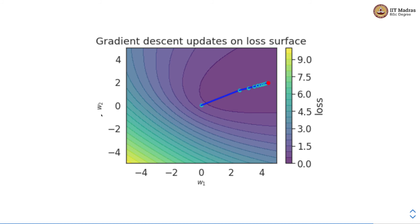This is how gradient descent update proceeds on the loss surface. The contours shown are the contours of the loss, and each step represents one gradient descent update. The red point is where we have the minimum value of the loss, and this is the point we finally reach starting from an initial point through multiple steps of gradient descent updates. When we reach this point, we get the weight vector corresponding to the minimum value of the loss among all other weight vectors.